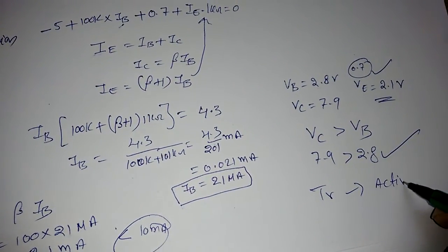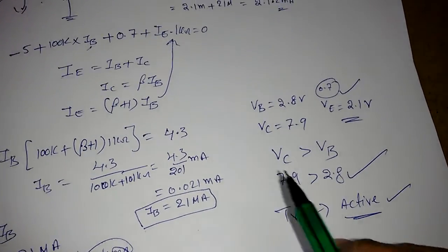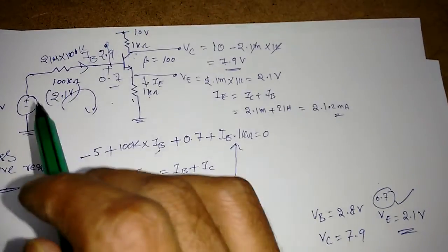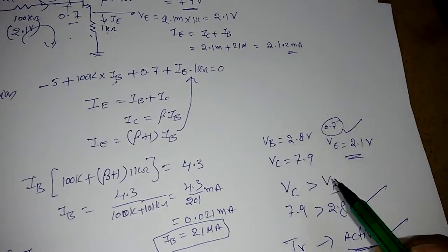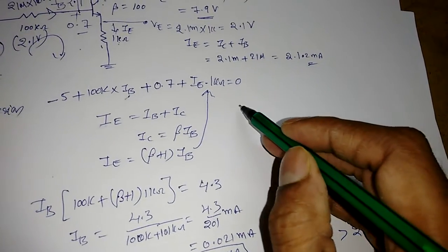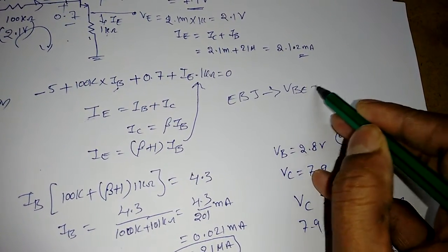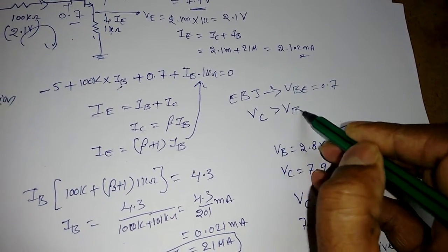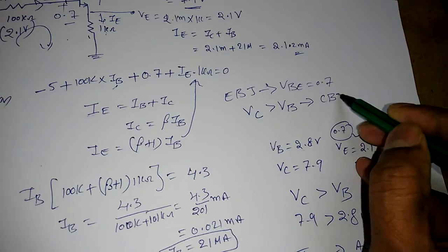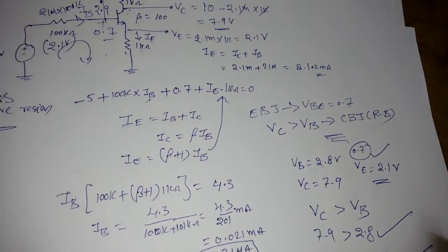I'm repeating: we need to find all currents and voltages through KVL and KCL. Once we find them, the emitter-base junction should be forward bias (VBE at least 0.7 volts) and VC should be greater than VB to make the collector-base junction reverse bias.